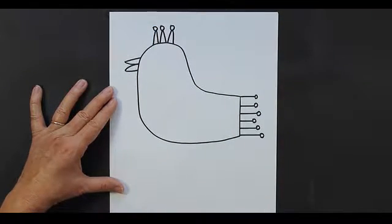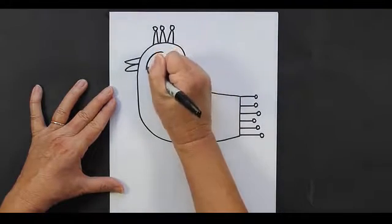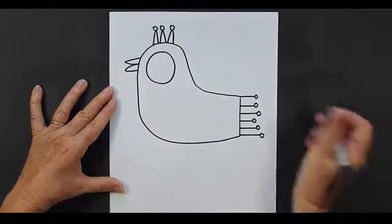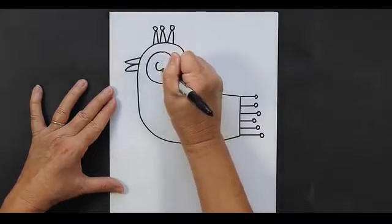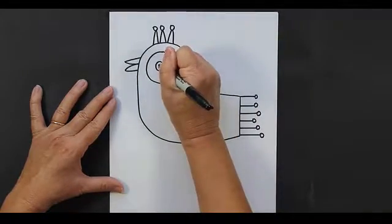Now this bird is going to have a gigantic eye area, so I'm going to make a very large circle just like that. Inside the circle I'm going to put a smaller circle and then a dot.